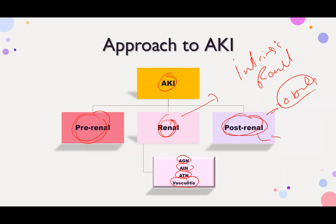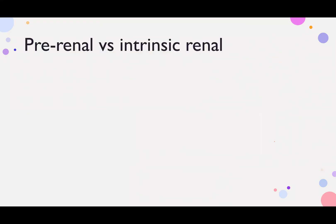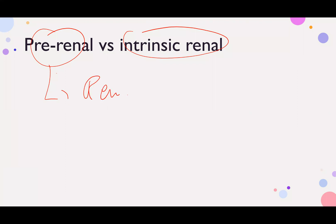Post-renal is nothing but an obstruction. Now, what is the difference between pre-renal and intrinsic renal? Kidneys love perfusion — kidneys love blood, kidneys love water. In pre-renal, what happens is renal hypoperfusion: the kidneys don't get blood, which is ischemia.